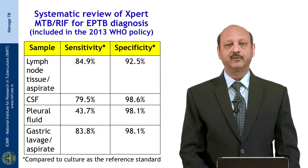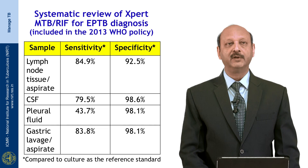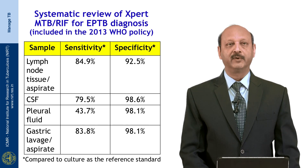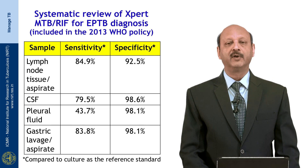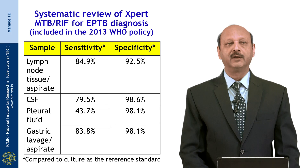The systematic review for GeneXpert MTB included in the WHO 2013 guidelines, compared to culture as a reference method, showed that for lymph node tissue or aspirate the sensitivity was almost 85% with a specificity of 92.5%. For CSF, the sensitivity was 79.5% with a specificity of 98.6%. For pleural fluid the sensitivity was found to be low, just 44%, with a high specificity of 98%. For gastric lavage or aspirate in children, sensitivity was 83.8% with a high specificity of 98%.